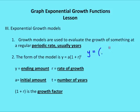So the formula becomes 10,000 — that's a, my initial amount — times one plus 0.5 to the fifth. My growth rate is 50%, identified as a decimal, and don't forget to include the one. That gives us 10,000 times 1.5 to the fifth.